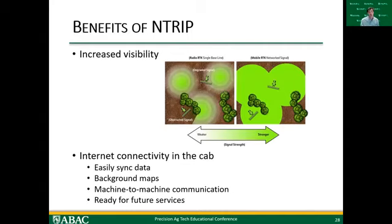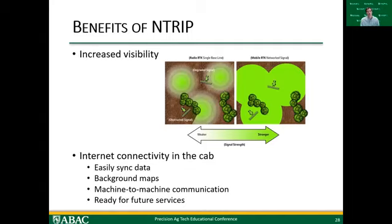In addition to inch-level accuracy over the internet, having internet in the cab opens up additional features: we can easily sync data, pull in background maps, and enable machine-to-machine communication — if one machine is talking to another, they can know where they're at, run at the same speeds, and enable fleet management, which is a big deal for larger operations. These companies are rolling out these technologies knowing you'll have internet connectivity in the cab in the future, making it a value-added service.